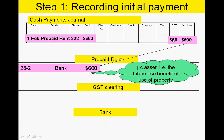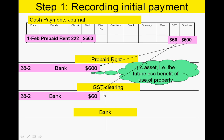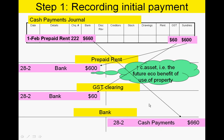When posting from the payments journal to the general ledger, we have a debit entry to prepaid rent because our current asset is increasing — we're creating a future economic benefit, i.e., use of the property for 12 months. We have a corresponding debit entry in our GST clearing account because any GST paid offsets the GST we collect from sales. These two amounts form part of our cash payments total, which will be a credit entry in our bank.